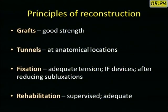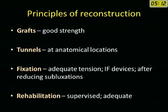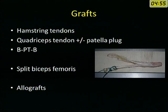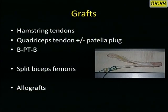The principle of reconstruction is to harvest grafts of good strength, drill tunnels at anatomical positions, and fix grafts under adequate tension using internal fixation devices after reducing subluxations, followed by supervised rehabilitation. Popular grafts include hamstring tendons, quadriceps tendons with or without patellar bone plug, and bone-patellar tendon-bone. The quadriceps tendon can be split for double bundle reconstruction. Split biceps can be used for the posterolateral corner. Allografts are not available in India.